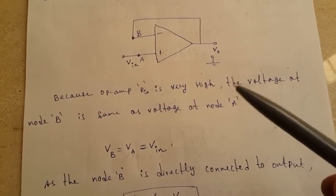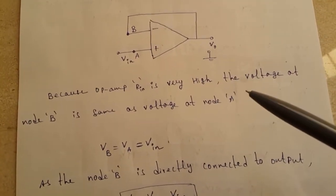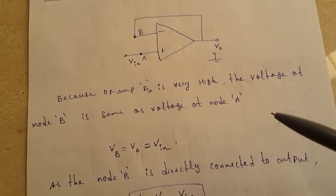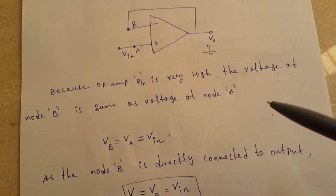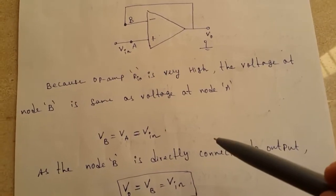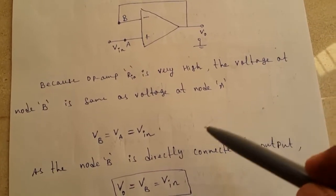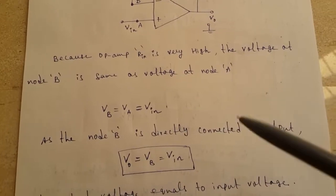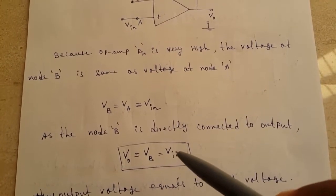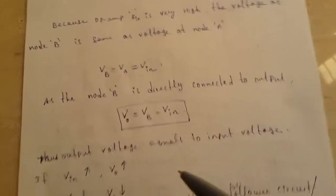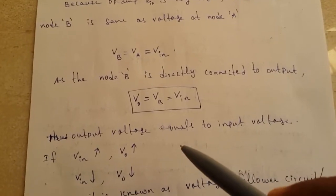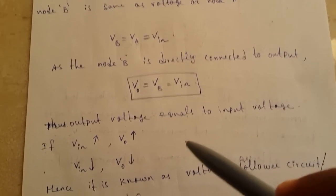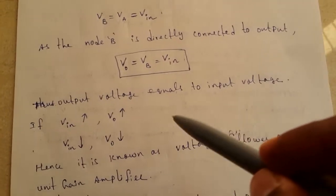The output voltage follows the input because the op-amp has very high input resistance R_in, so the voltage at node B is the same as at node A. Therefore VA equals VB, which equals VIN. Since node B is directly connected to the output, V_out equals VB, which equals VIN.